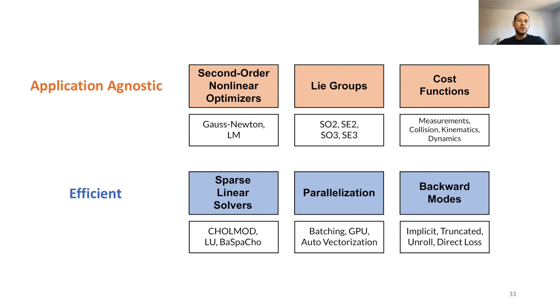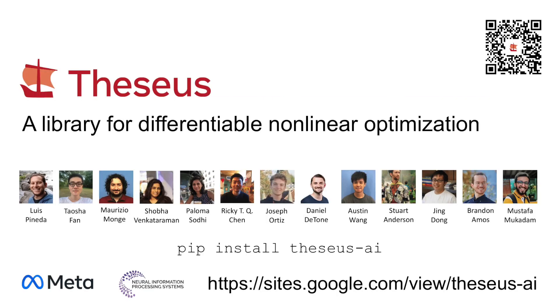In summary, we illustrate several applications using the same application-agnostic interface and demonstrate significant improvements in performance with our efficiency-based design. To get started, you can pip install Theseus-AI. And for more details, you can visit our website from this link or QR code.